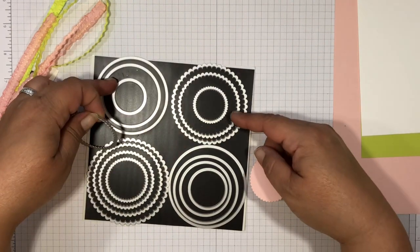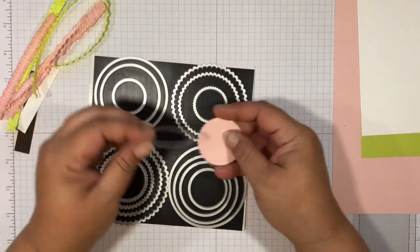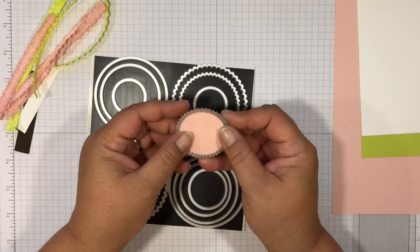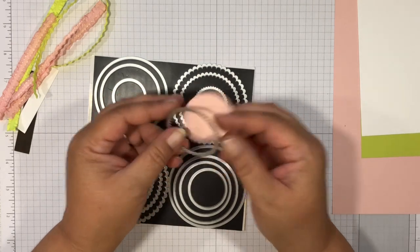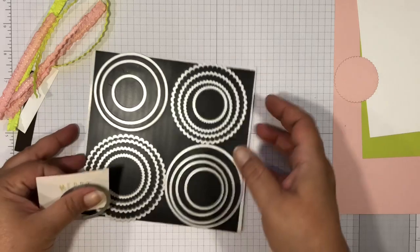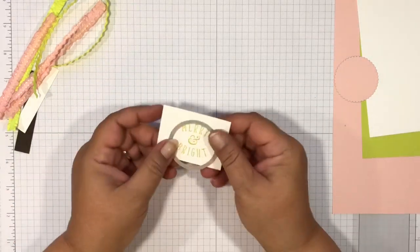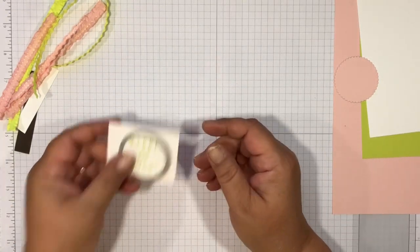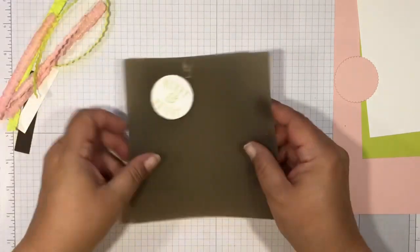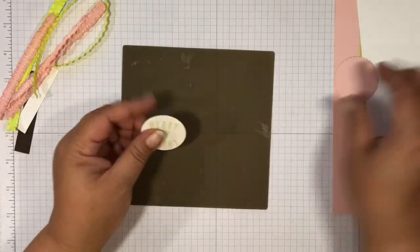You're going to take this and then with a piece of powder pink you're going to use this one right here, so it's the second one in on each side. We've already done this one. I'm going to run this through the Big Shot.